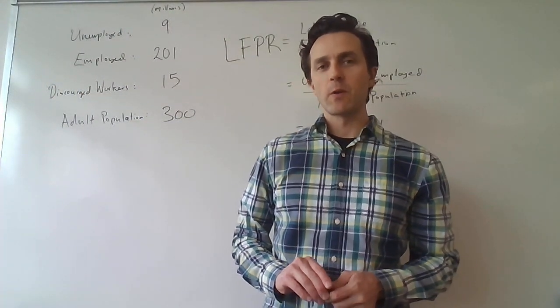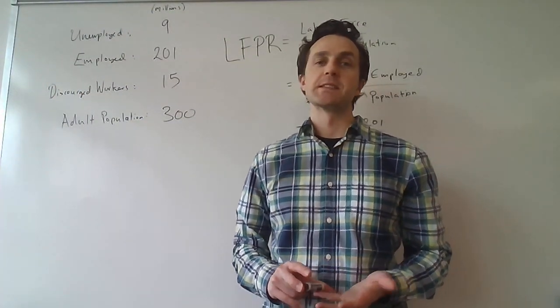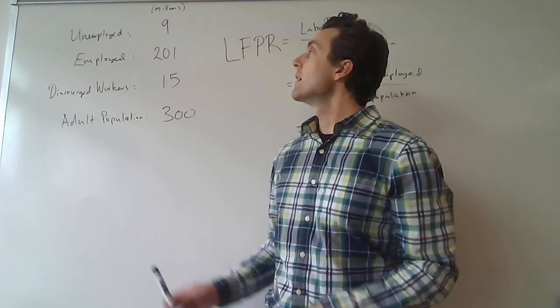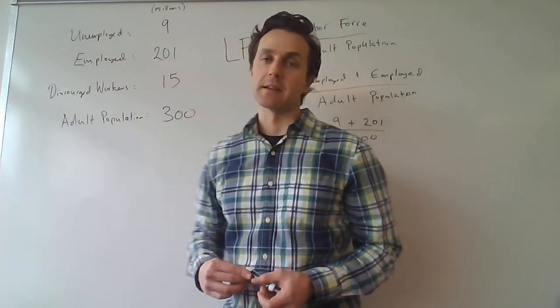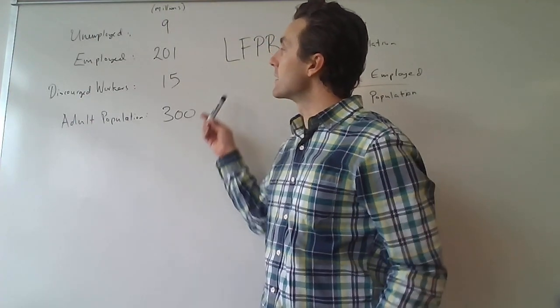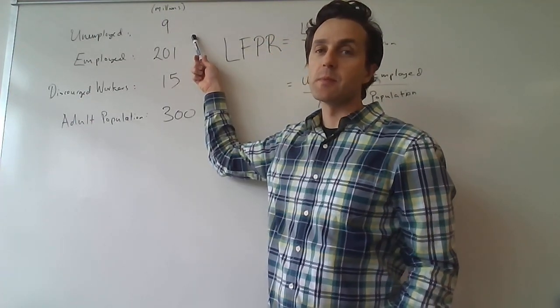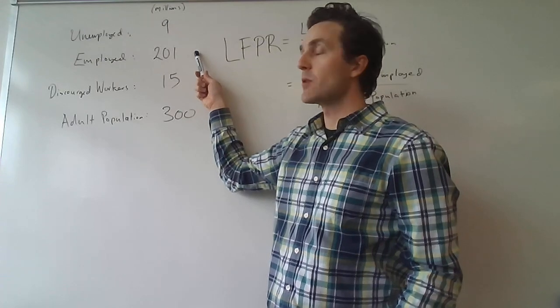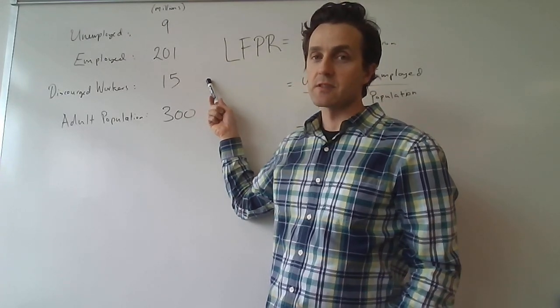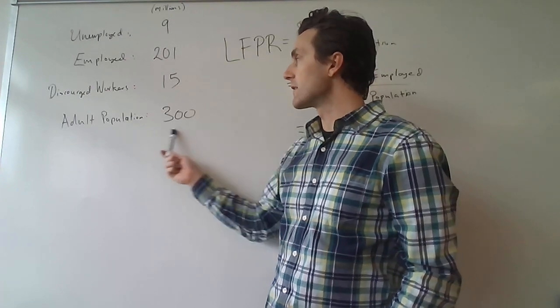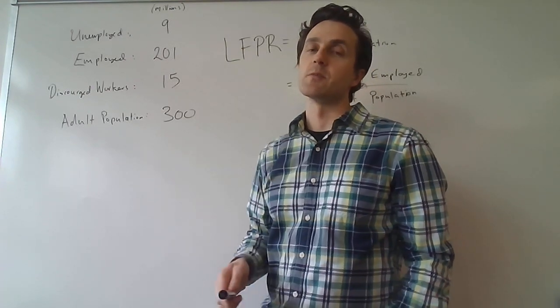Suppose we want to calculate the labor force participation rate in an economy where the following data has been collected regarding the labor market. In this economy, the number of people who are unemployed is 9 million, the number of people who are employed is 201 million, the number of discouraged workers is 15 million, and the entire adult population is 300 million.